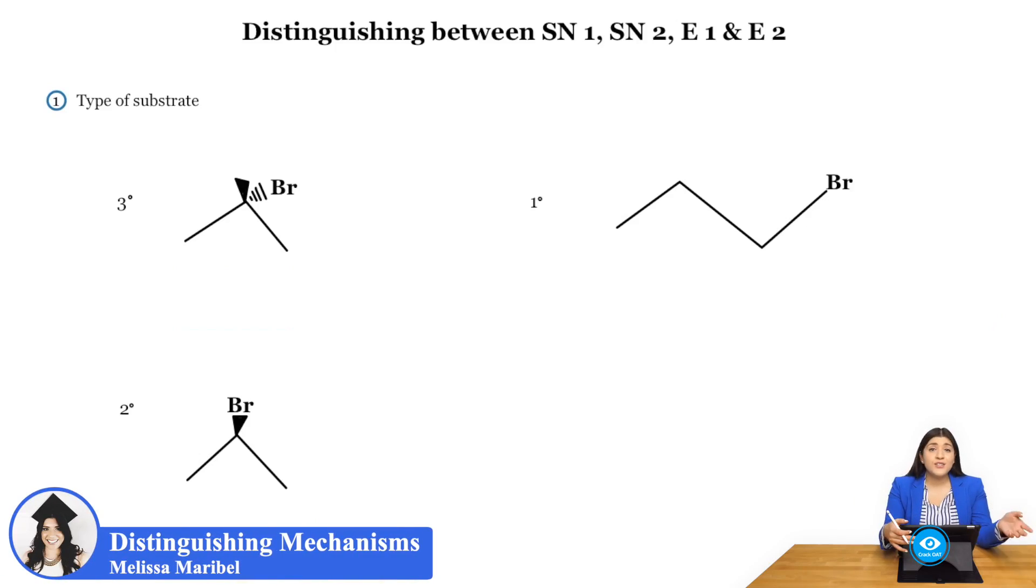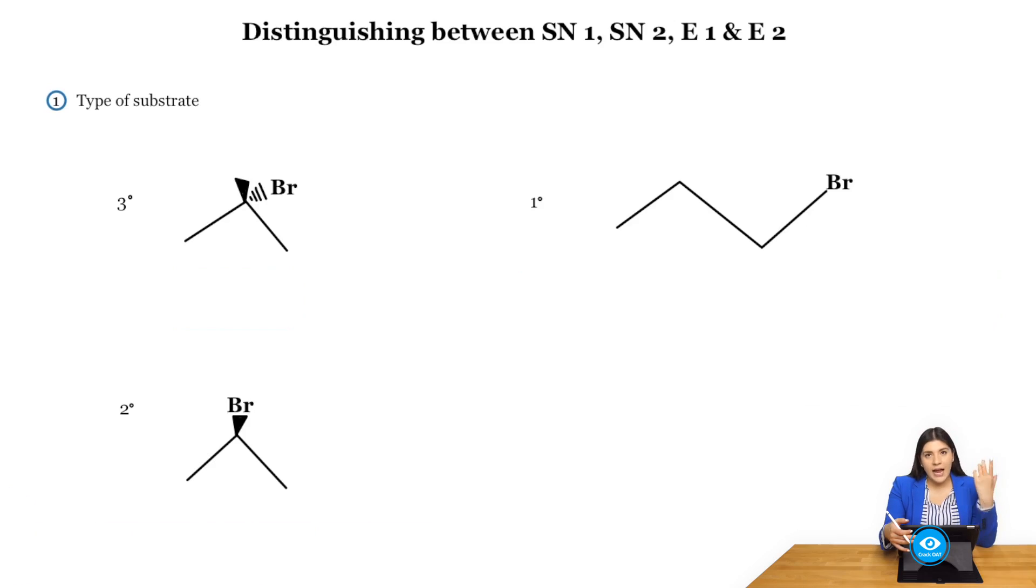Now that you know what SN1, SN2, E1, and E2 are, let's look at the different factors that you can use to instantly tell which type of reaction or mechanism this is going to be. You will have different examples and we'll go over some, asking okay am I going to do SN2, E1, and so on.